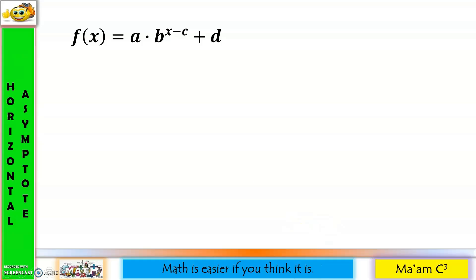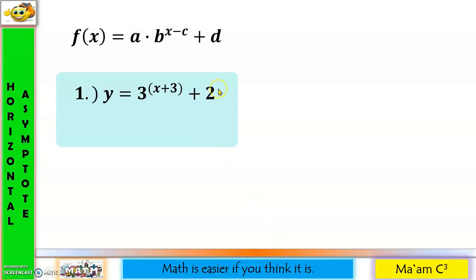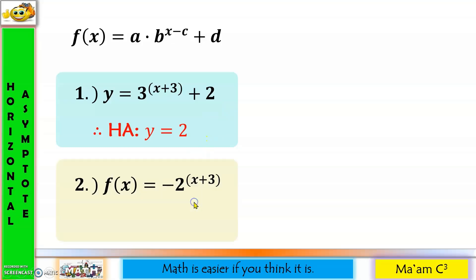Let's look at some examples. For number one, d is the constant term, so the horizontal asymptote is y equals 2. For the next function, since there is no d, the horizontal asymptote is y equals 0.